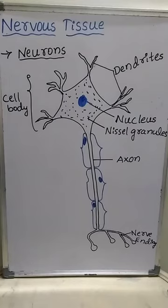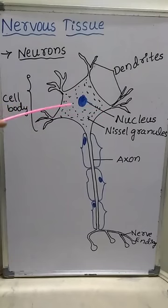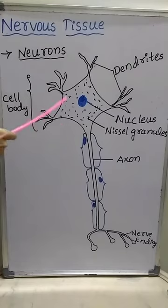The cell body is also called cytone or soma. In the cell body, Nissl granules are present, along with neurofibrils. The cell body contains the nucleus, Nissl granules, and neurofibrils. Neurofibrils are very small fibrils that are helpful in the transmission of impulses or messages.